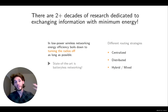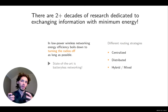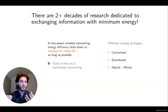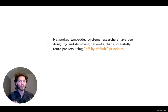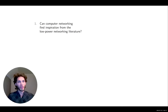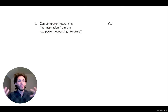In the embedded wireless networking world, there have been many different approaches — more centralized, more distributed, or hybrid routing strategies — all with different performance trade-offs that explore the design space extensively. Researchers in that community have successfully routed packets in networks where devices are essentially off by default — most of the time turned off or unable to communicate with neighbors. I argue we can take inspiration from that work and see how we could translate those ideas into wired network design.